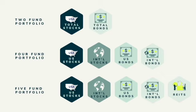The two-fund portfolio simply divides your assets between total stocks and total bonds. You can also go further with the four-fund portfolio, which differentiates U.S. versus international stocks and bonds. The five-fund portfolio then adds REITs as an additional asset class.